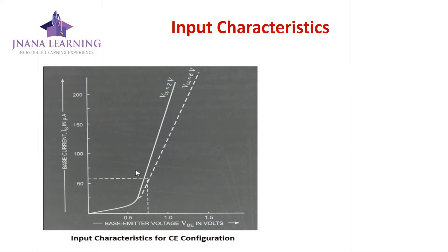Here are the input characteristics for common emitter configuration. The input characteristics curve is drawn between the base current IB and base-emitter voltage VBE, for constant values of VCE — that is, keeping the collector-emitter voltage constant. We determine values of base current for various values of base-emitter voltage. Base current is measured in microamperes and base-emitter voltage in volts. Curves are shown for VCE equal to 2 volts and 6 volts.